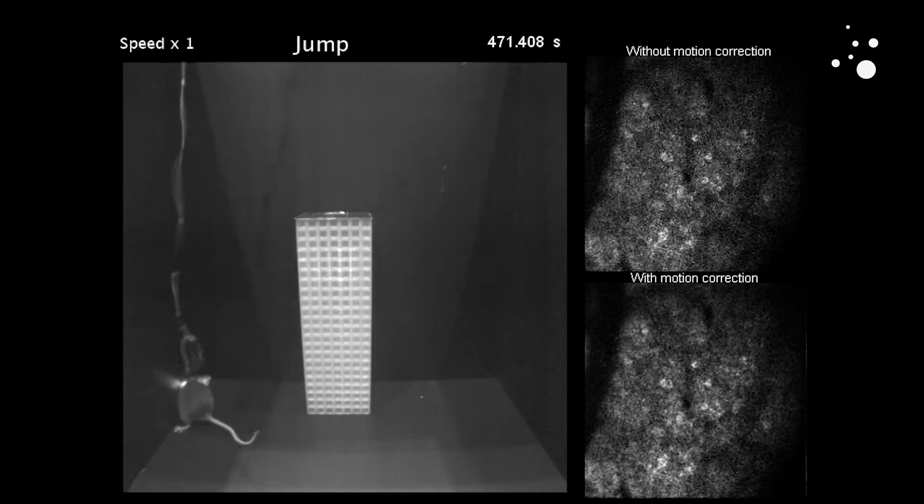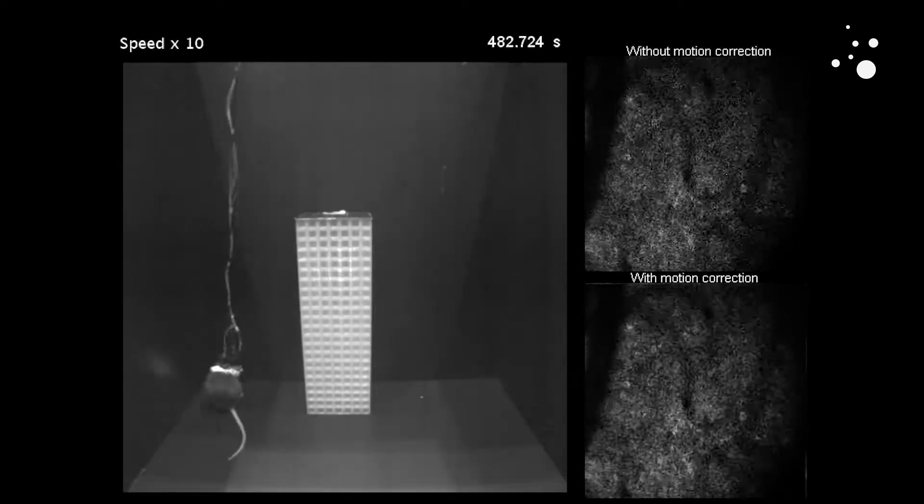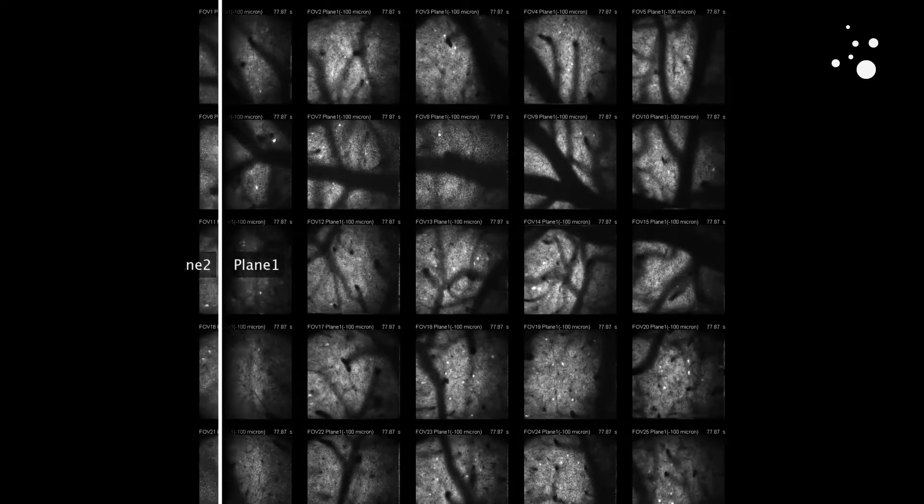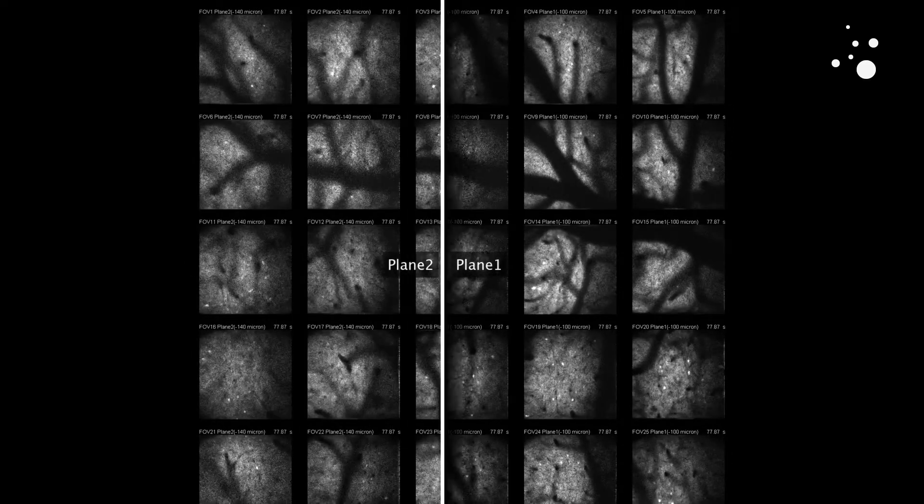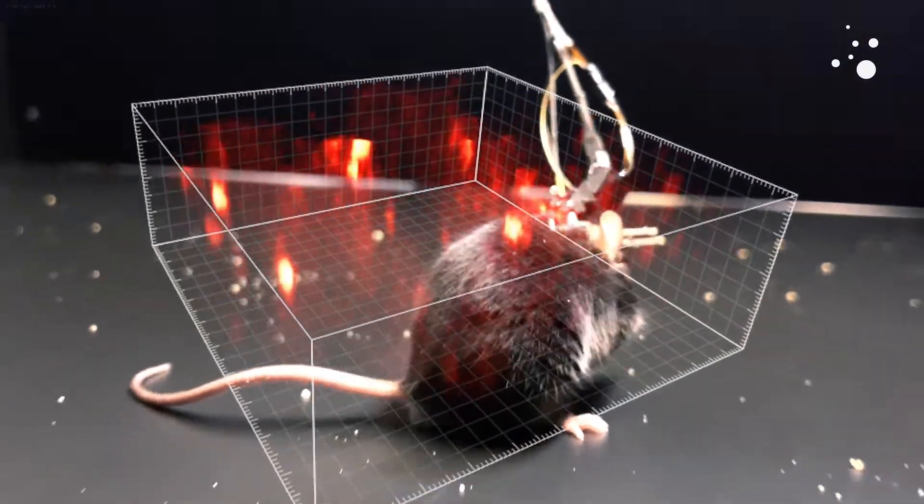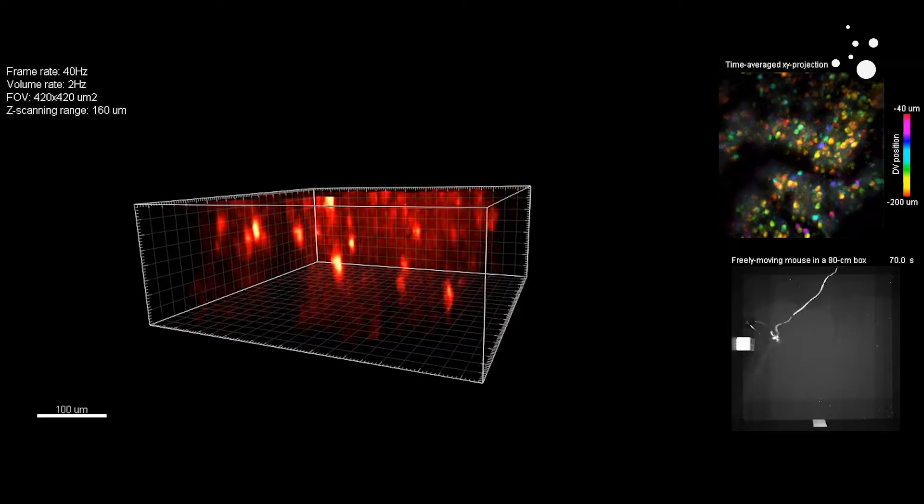Mini2P records simultaneously from thousands of brain cells. By using a kind of patchwork quilt technique, it can map even larger landscapes, like these 10,000 brain cells across the visual cortex. The microscope also covers the z-axis and can record 3D volumes of brain tissue.